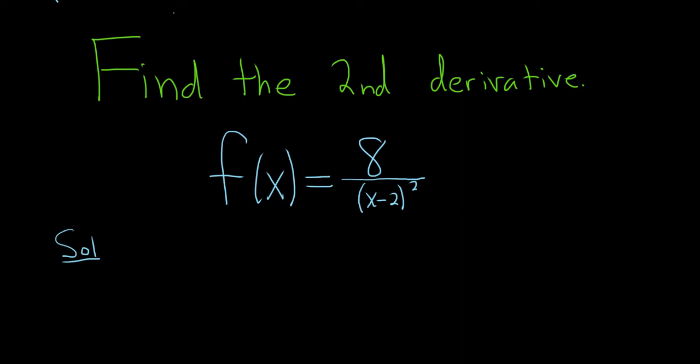However, whenever you have a number in the numerator and you have a quotient, it's a good idea to bring the bottom upstairs and just use the chain rule. We can write this as 8 times (x minus 2), and when you bring the bottom piece upstairs, the exponent becomes negative.